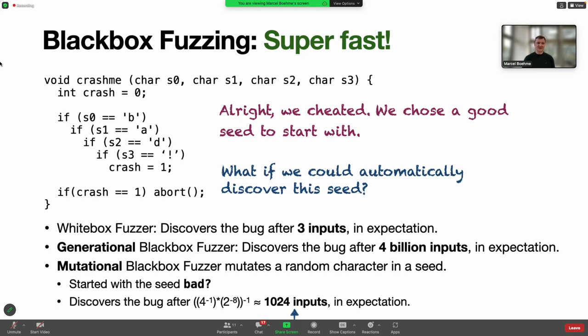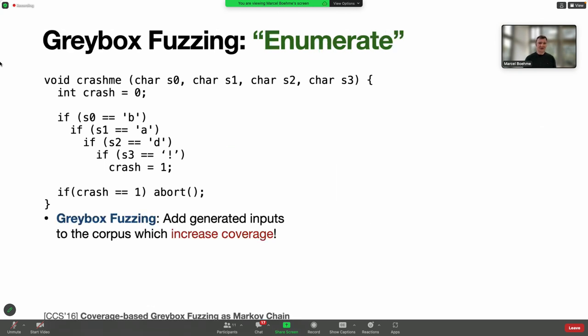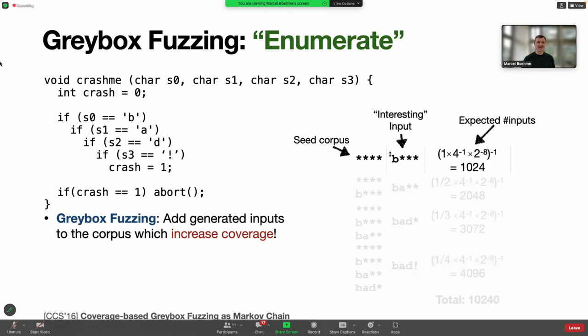Can we do even better? Can we automatically discover this seed input? This is where the third approach, gray box fuzzing, comes in. Can we take the advantages of black box and white box fuzzing and combine them? Gray box fuzzing doesn't analyze the program, but takes coverage feedback and adds generated inputs to the corpus which increase coverage. Suppose we start with a random input. The probability we generate the first coverage-increasing input is 1 over 1,024, which means in expectation we require about 1,024 inputs.